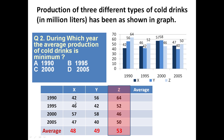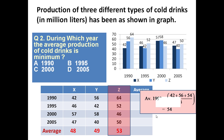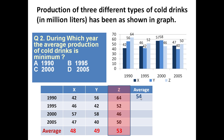In 1990, the average is 42 + 56 + 64 divided by 3. In this manner you can calculate average production during the year 1990, which gives 54 million litres. Similarly, you calculate average production in 1995, 2000, and 2005.